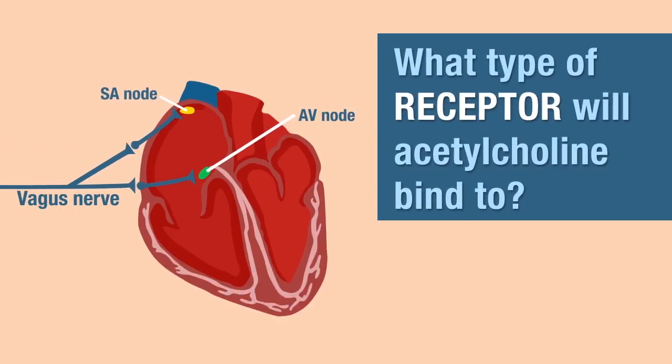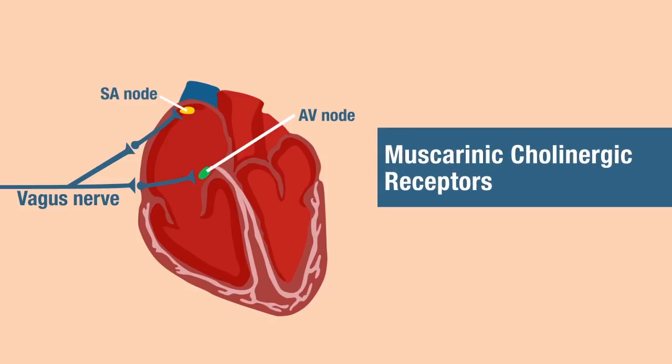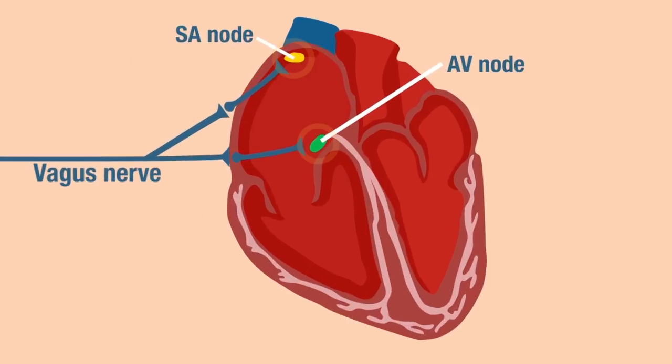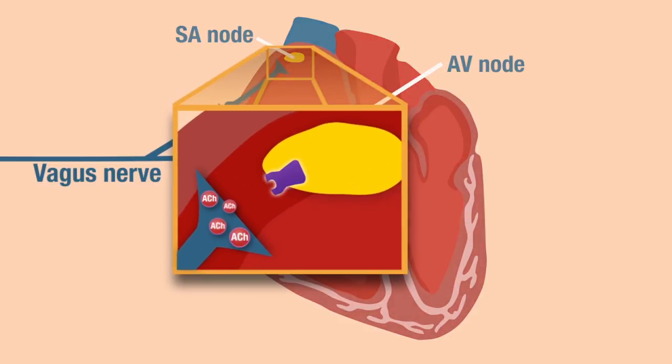To what type of receptor will acetylcholine bind? The receptors that are at the SA and the AV nodes — the effector — are the muscarinic cholinergic receptors. They have to be at the SA and the AV node because acetylcholine is being released at that location, and therefore acetylcholine must bind to these receptors.